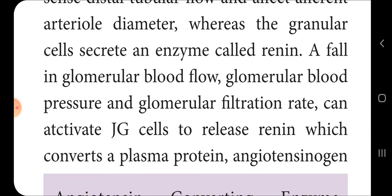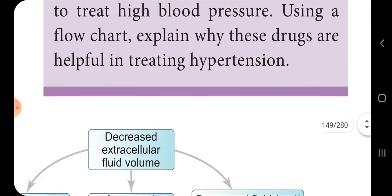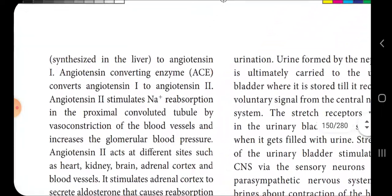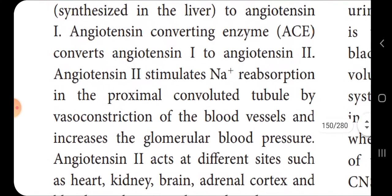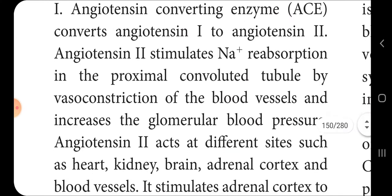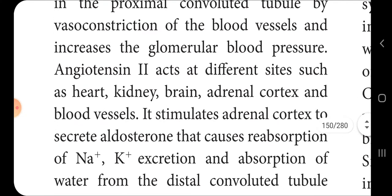A fall in glomerular blood flow, glomerular blood pressure, and glomerular filtration rate can activate the juxtaglomerular cells to release renin, which converts the plasma protein angiotensinogen to angiotensin 1. Angiotensin-converting enzyme (ACE) then converts angiotensin 1 to angiotensin 2. Angiotensin 2 stimulates sodium ion reabsorption in the proximal convoluted tubule through vasoconstriction of blood vessels, increasing glomerular blood pressure.